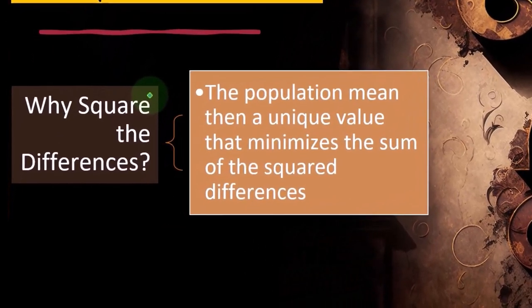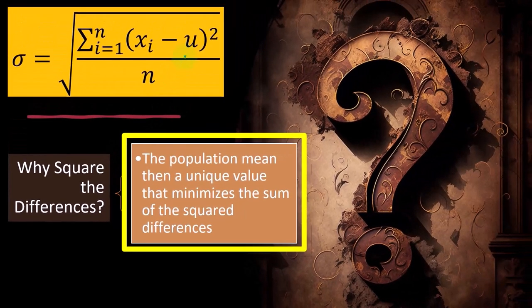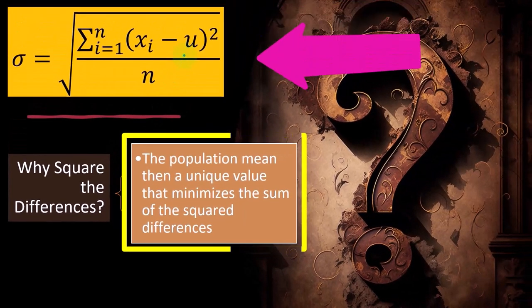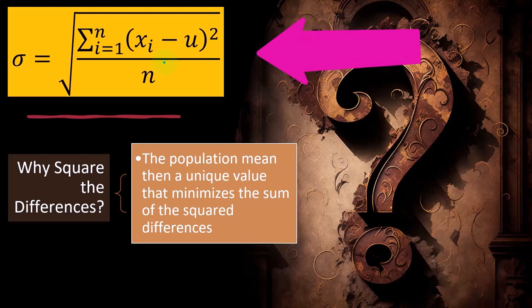The population mean is then a unique value that minimizes the sum of the square differences. In other words, it has a characteristic to it that it's going to come up with a unique number. So we'll show this in one of our example problems.